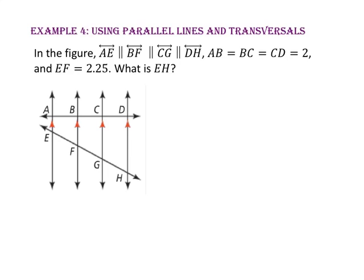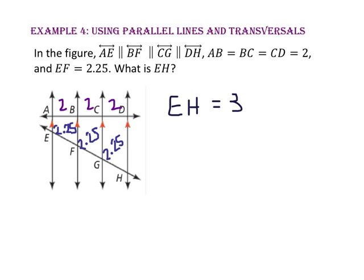In Example 4, we will use parallel lines and transversals. In the figure, line AE is parallel to line BF, which is parallel to line CG, which is parallel to line DH. Also, the length of segment AB equals the length of segment BC equals the length of segment CD, which is 2. Since all three segments on the first transversal are congruent, segments EF, FG, and GH on the other transversal are also congruent. Since the length of segment EF is 2.25, segments FG and GH are also 2.25. The length of segment EH equals 3 times 2.25, or 6.75.